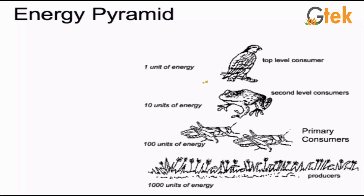The secondary consumer gets only 10 units of energy, and finally the top level consumer, that is the tertiary consumer, has only 1 unit of energy.